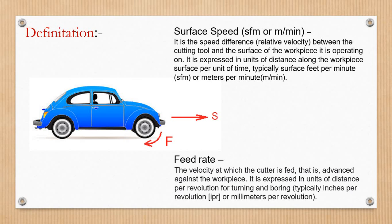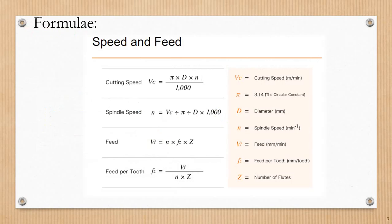These are the basic formulas. Cutting speed, spindle speed, feed rate, and feed per tooth. Cutting speed is equal to pi D N by 1000. Vc is cutting speed, pi value is 3.14, D is cutting tool diameter, and N is spindle speed.